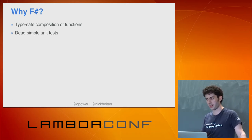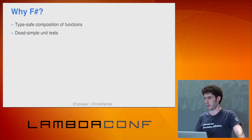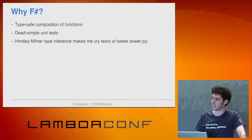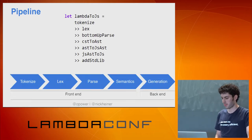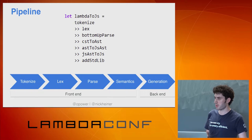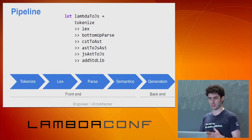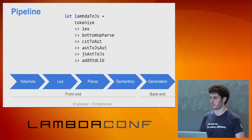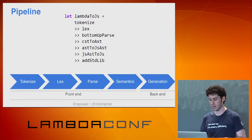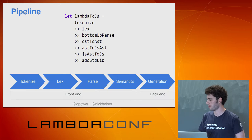F-sharp also has very simple unit tests, and for something like this where it's easy to set up pure functions, unit testing really lends itself to that. And I can't get enough of Hindley-Milner type inference — any chance I had to work with that, I was going to take. So this is the pipeline — a little bit simplified, but we're going to go through each step. There's the F-sharp that I wrote to implement this, and you can see the nice chaining of functions. We have the front end — the syntax and semantics, how the program looks — and then the back end, which is the generation. You can envision a modular architecture where today LambdaScript targets JavaScript, but you could swap that out with a back end that targets the JVM or the CLR.